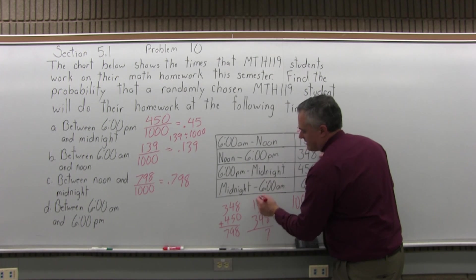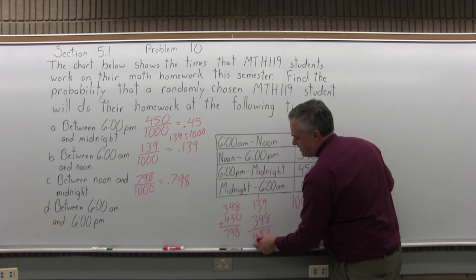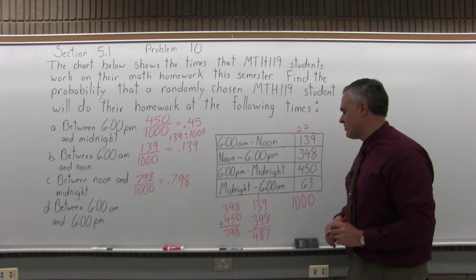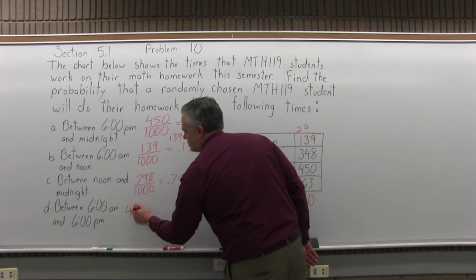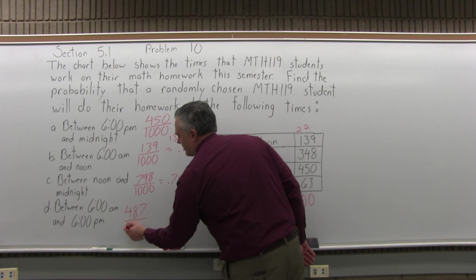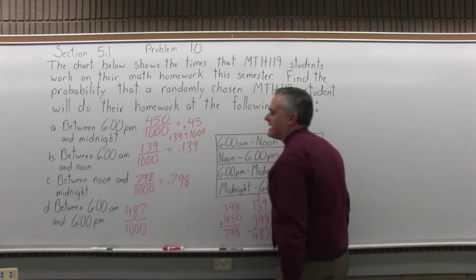So 9 and 8 is 17, carry the 1. 1, 3, 4 adds up to 8, don't carry anything. And then, 1 and 3 is 4. 487 students out of 1,000 altogether do their homework between 6 a.m. and 6 p.m.